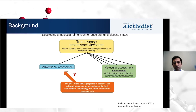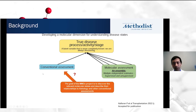This brings us to the current state of assessment of rejection, and how molecular tools can help us get a better representation of the true disease process activity. On the left is the conventional assessment — histopathology of the biopsy — and on the right is the molecular assessment, which is what MMDX adds. We still have to understand how to use this molecular assessment to supplement conventional assessment, and whether it gives us more data than we already know.